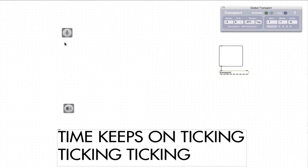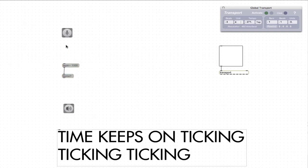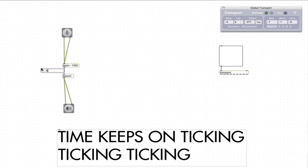I'll make a tape delay: tape input, tape output with one thousand milliseconds, and a tape read head. Then hook this up with the microphone in and out to the speakers, and make a little bit of feedback using a multiply object — multiply that sound by 0.6, which will be a good amount of feedback.